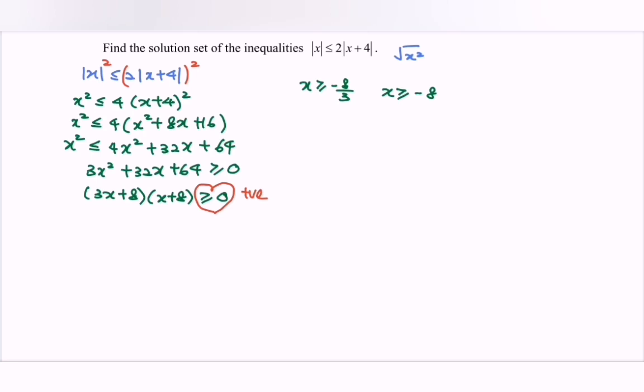Illustrate the situation in the real number line. So we have negative 8 and then we have negative 8 over 3. Then circle towards the right. Then circle towards the right.